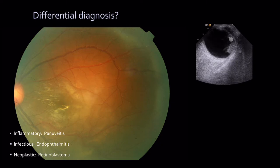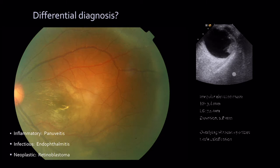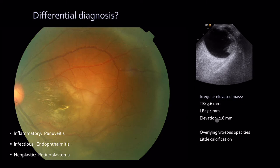On ultrasound scan, you can see a mass with some calcified spots in it. The mass was quite broad — 7.1 by 3.6 millimetres with an elevation of 2.8 millimetres — with lots of vitreous opacities and a little calcification as well.